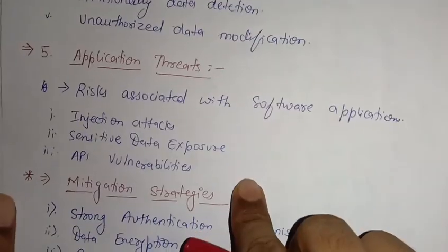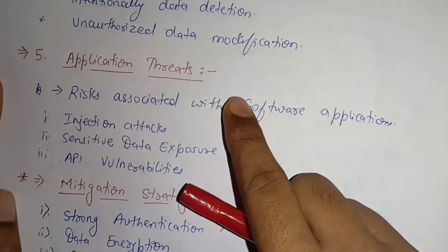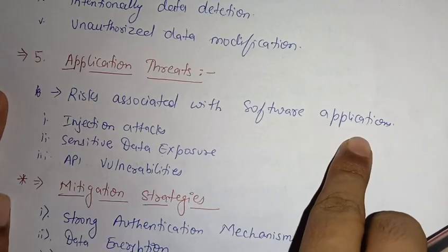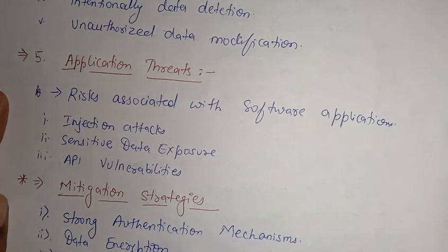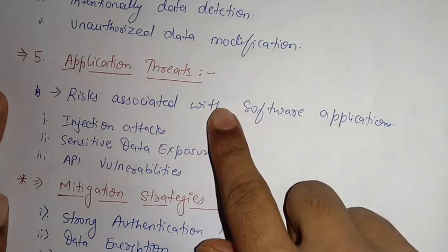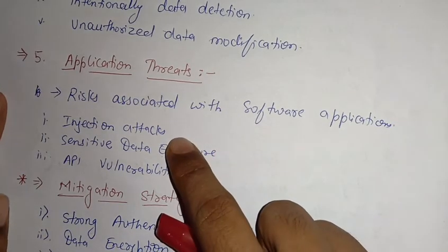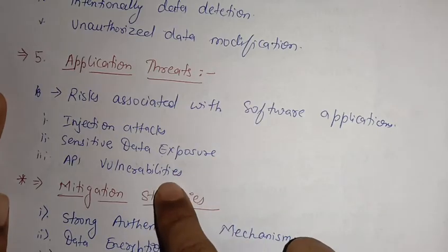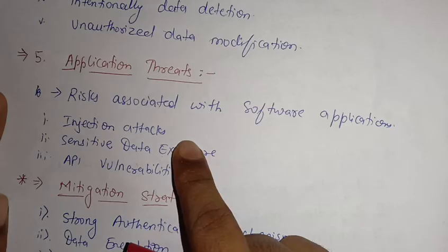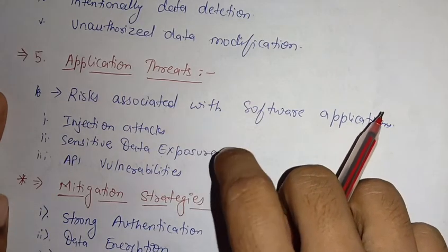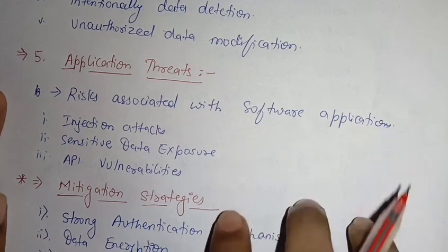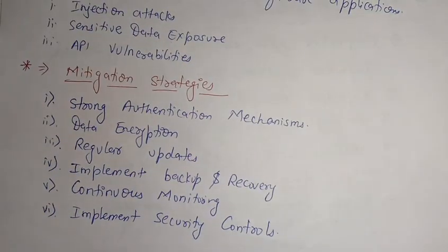The fifth and last threat is application threat — risks associated with software applications. When threats exist within applications and apps in the database, they fall under application threats. These are carried out through injection attacks, sensitive data exposure, and API vulnerabilities. By injecting SQL queries and SQL scripts, attackers try to steal information through application threats, which also falls under database threats.